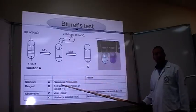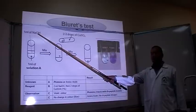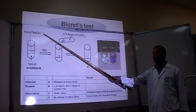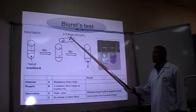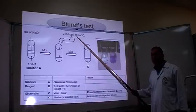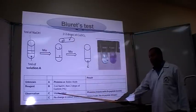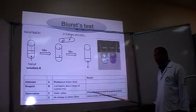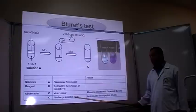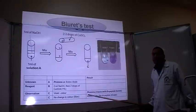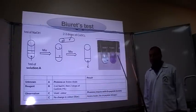To do the experiment, take one ml of your solution — egg white, protein, or amino acids — then add NaOH to make the medium alkaline. Mix, then add two drops of copper sulfate to form the complex. In the case of proteins, you get a violet color, meaning proteins are present. If you don't get a violet color, that means you probably have amino acids. Now let's start doing the experiment.